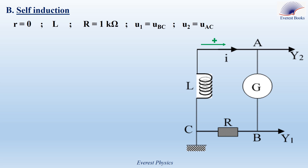Let's move to the self-induction phenomenon. The coil is of negligible resistance and of inductance L. It is connected in series with a resistor of resistance 1 kilo-ohm and a generator G. We will take U1 as UBC and U2 as UAC, with the positive sense in the direction of the current.